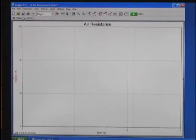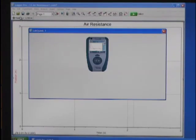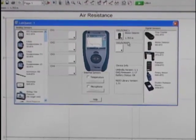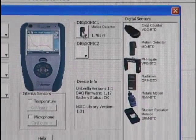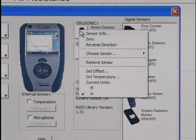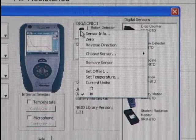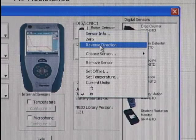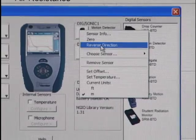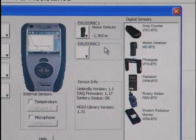Open the LabQuest sensors dialog by clicking up in the toolbar here. You'll see that the motion detector is reporting the distance to the floor with a positive number. If I can get the pop-up menu for the motion detector and first reverse the direction of the coordinate system, this will now make up as positive.